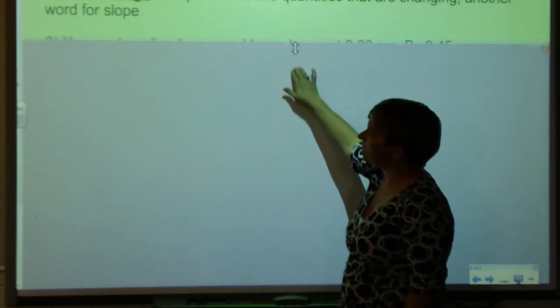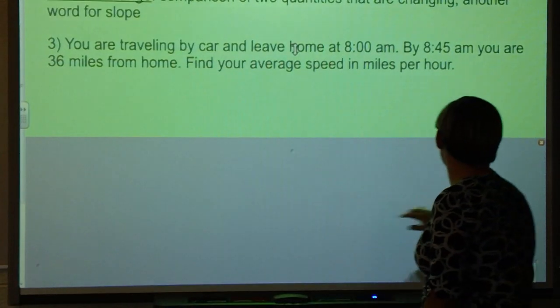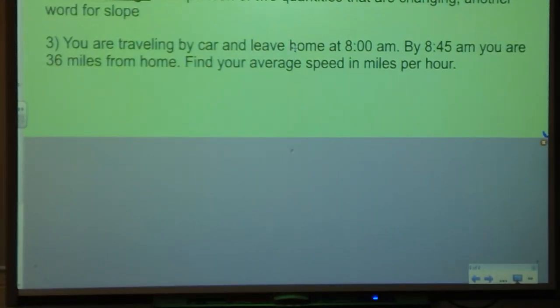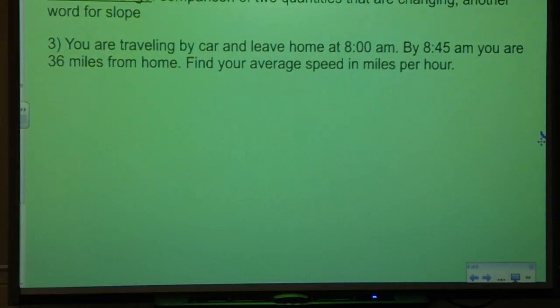Another thing that you might see referred to is rate of change. When I'm talking about a rate of change, it's a comparison of two quantities that are changing. It's another word for slope. Let's take a look at a problem that might use that. You're traveling by car and you leave home at 8:00 a.m. By 8:45 a.m., you are 36 miles from home. Find your average speed in miles per hour. Another way I could phrase that question is I could say find your average rate of change.